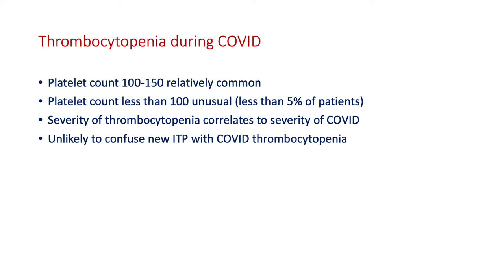Turning to thrombocytopenia during COVID — a reduced platelet count is quite common but only very mild. Having a platelet count below 100 occurs in less than one in 20 patients, while the normal range is 150 to 400. The severity of the low platelet count correlates with the severity of COVID, but very few COVID patients have counts as low as below 20, which is what you typically see with ITP — making it unlikely the two would be confused.